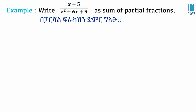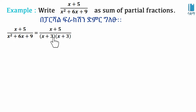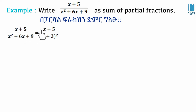In the first place, we have the denominator factorization. The denominator factors as x plus 3 times x plus 3. In this case, x plus 3 is squared. We have the linear factor x plus 3 with multiplicity 2.